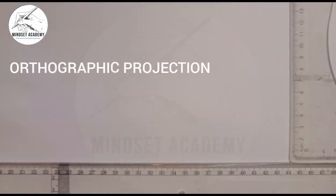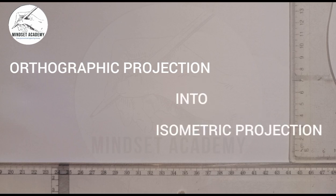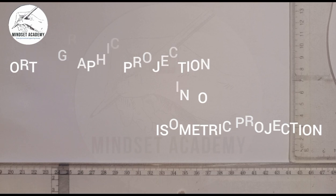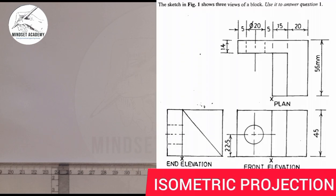Welcome to Mindset Academy. In this tutorial, we want to reproduce the figure displayed on the right-hand side of the screen in isometric projection. This means we are transforming the given figure from orthographic projection into isometric projection.